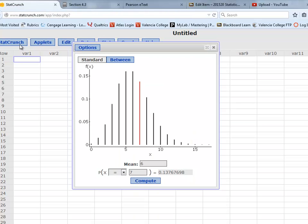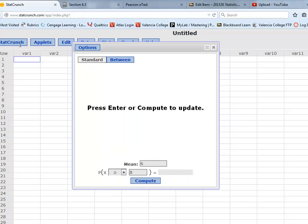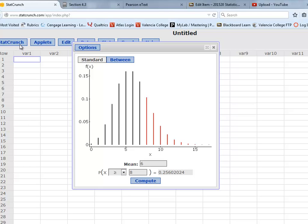So when I click on StatCrunch, I'm going to keep the same mean for this problem. And I'm going to choose greater than or equal to 8. And when I compute, it's going to give me that cumulative value total.